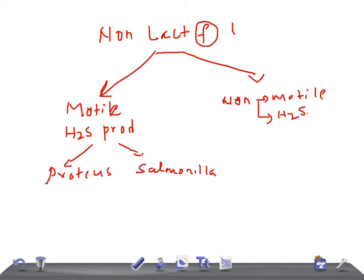In the non-H2S producing, non-motile category, we have two bacteria: Shigella and Yersinia pestis. So to summarize, non-lactose fermenting bacteria are divided based on motility and H2S production. Motile and H2S producing: Proteus and Salmonella. Non-motile and non-H2S producing: Shigella and Yersinia pestis.